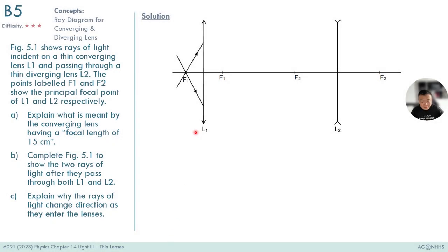This is a question on converging lens and diverging lens. The diverging lens part is new. Part A explains what focal length of 15 cm means. It basically means that the distance between the optical center of the lens and the principal focal point of the lens is 15 cm.